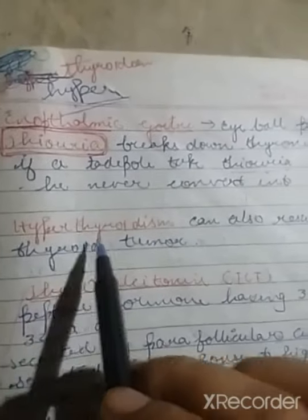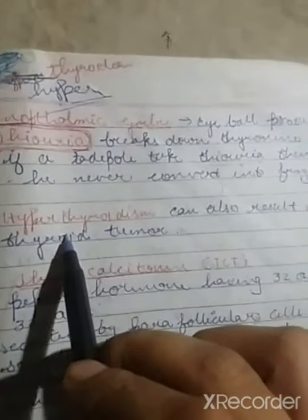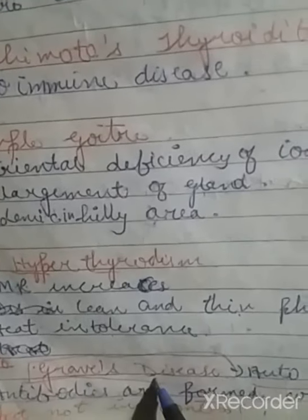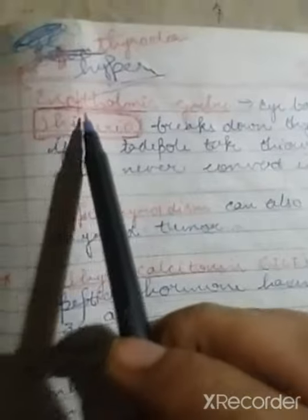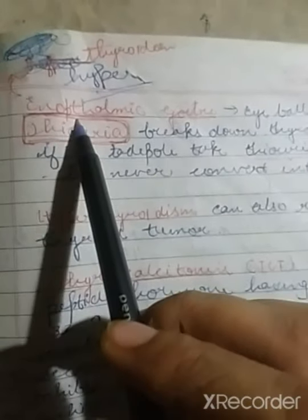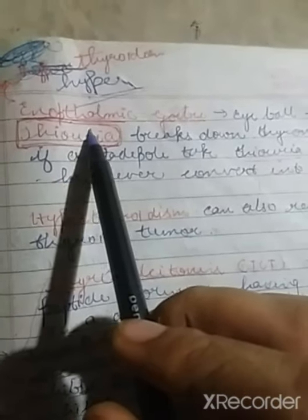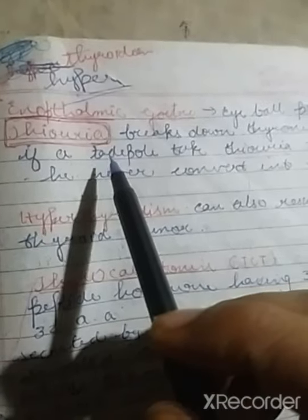Hyperthyroidism can occur due to a thyroid tumor. Graves' disease is an autoimmune disease in which antibodies are formed that mimic thyroid-stimulating hormone (TSH), resulting in exophthalmic goiter, where the eyeball protrudes outward.